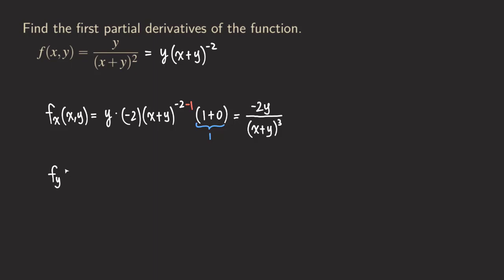Now fy: this time we are differentiating f with respect to y. This time we actually need to use the product rule because both functions have a y in them — the first function is y and the second function is (x+y)^(−2). Since both have y in them, we use the product rule.